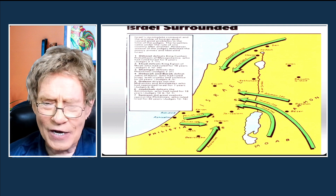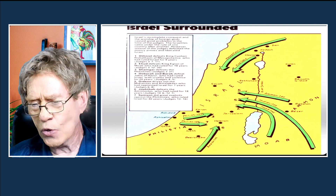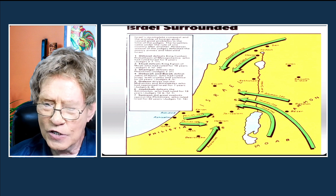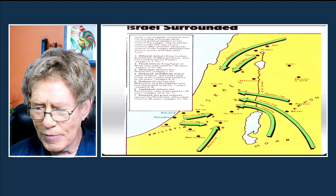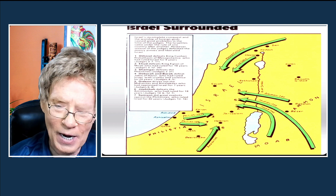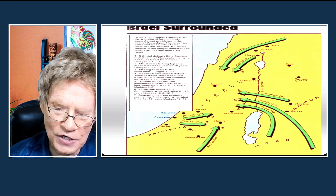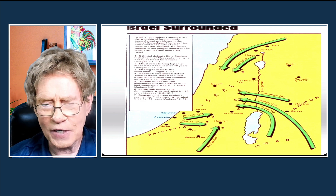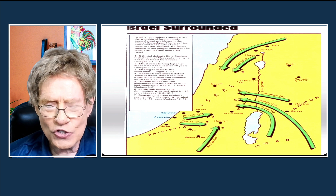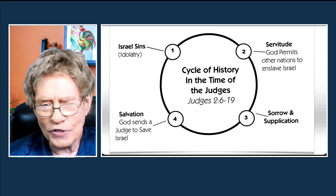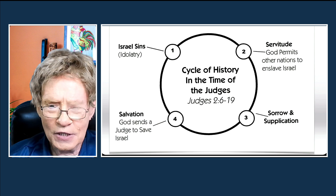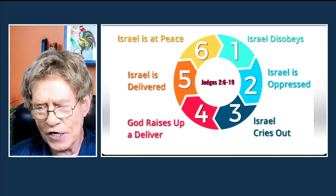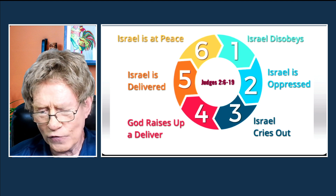Here are the surrounding enemies that Israel had around them — the Mesopotamians, King Jabin, the Ammonites, the Midianites, the Moabites, the Amalekites, the Philistines. They are oppressed by different peoples at different times. Here is a list of the judges looked at so far, and here's that cycle looking at it in four steps, or in six steps if you break it down further — Israel's crying out to the Lord, repenting, God raising up a deliverer, Israel delivered and at peace, then going back into the same cycle.